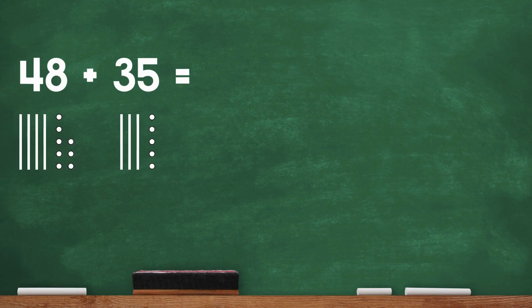48 is 4 tens and 8 ones. 35 is 3 tens and 5 ones. Check your work. Pause the video if you need to make any corrections.